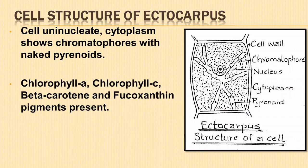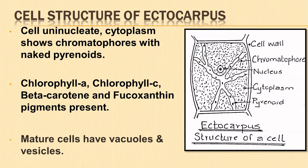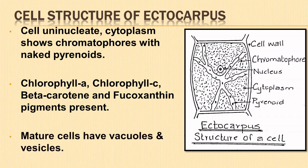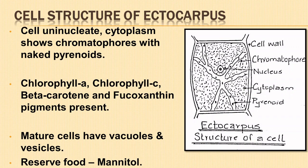Each cell is uninucleate and the cytoplasm shows a number of disc-shaped chromatophores associated with naked pyrenoid. The chromatophores of Ectocarpus possess chlorophyll A, chlorophyll C, beta-carotene and fucoxanthin. Mature cells show the presence of large and numerous vacuoles and also few small vesicles. All other eukaryotic organelles are also present. The reserved food of Ectocarpus is mannitol.